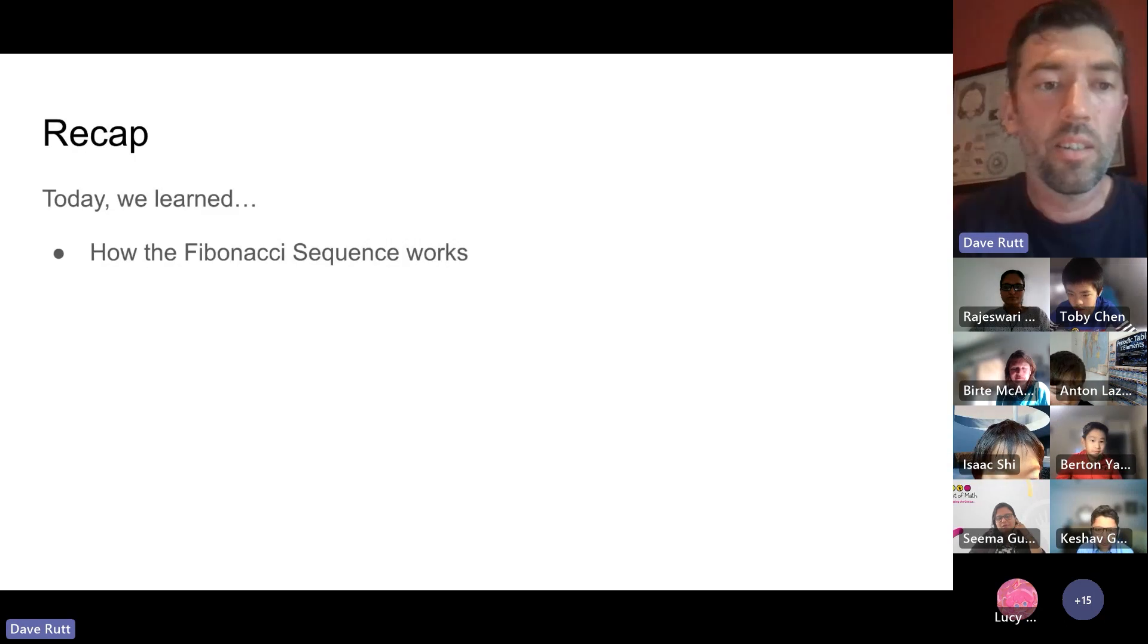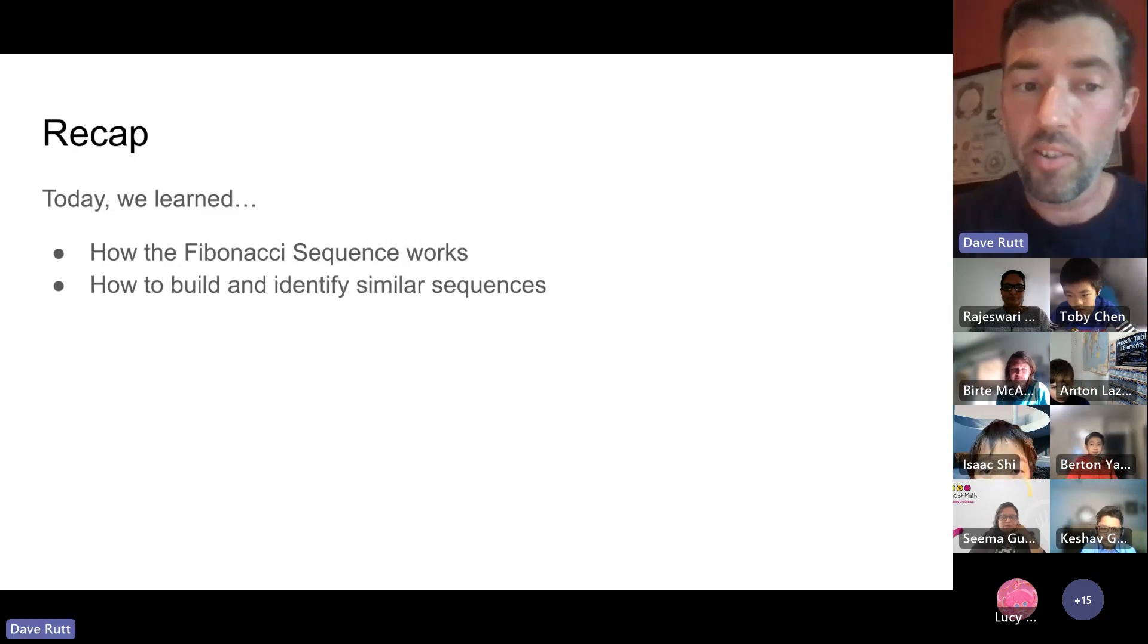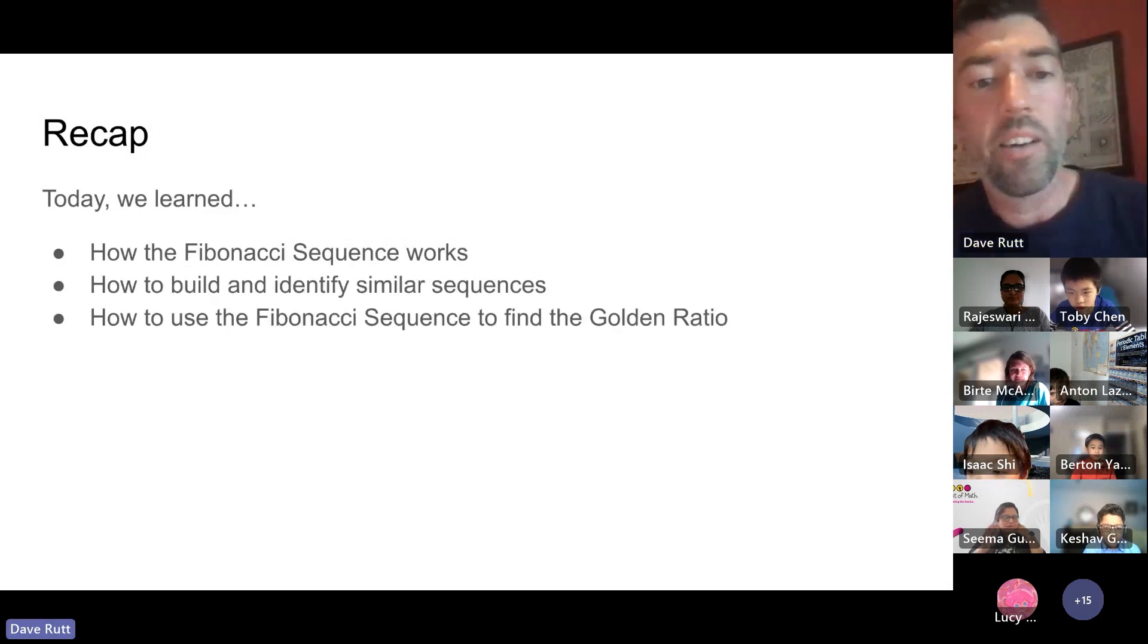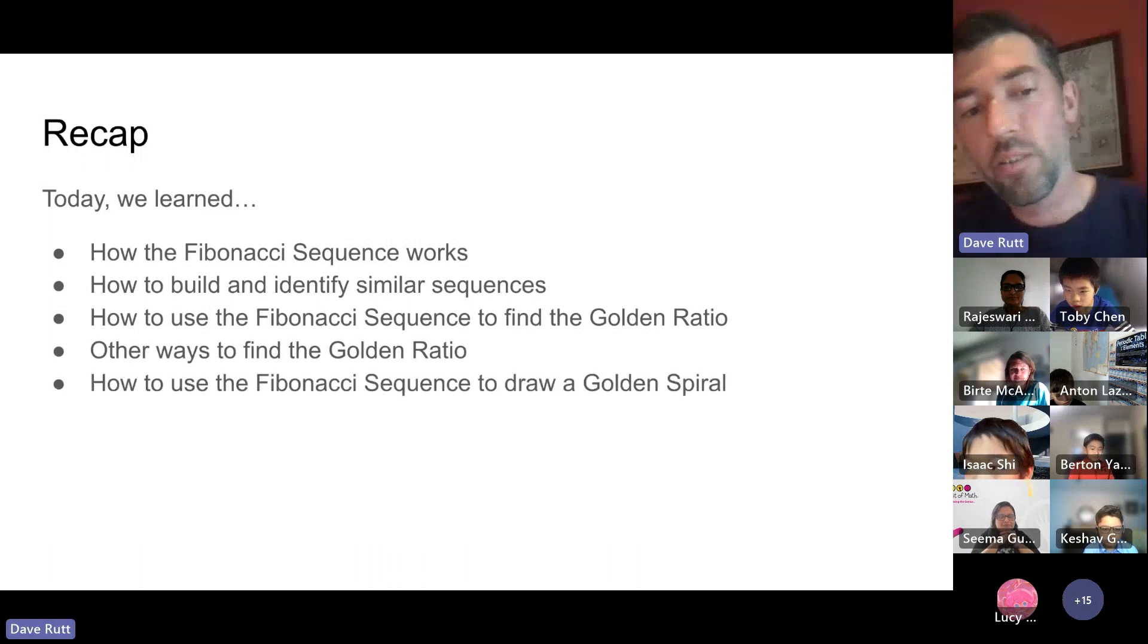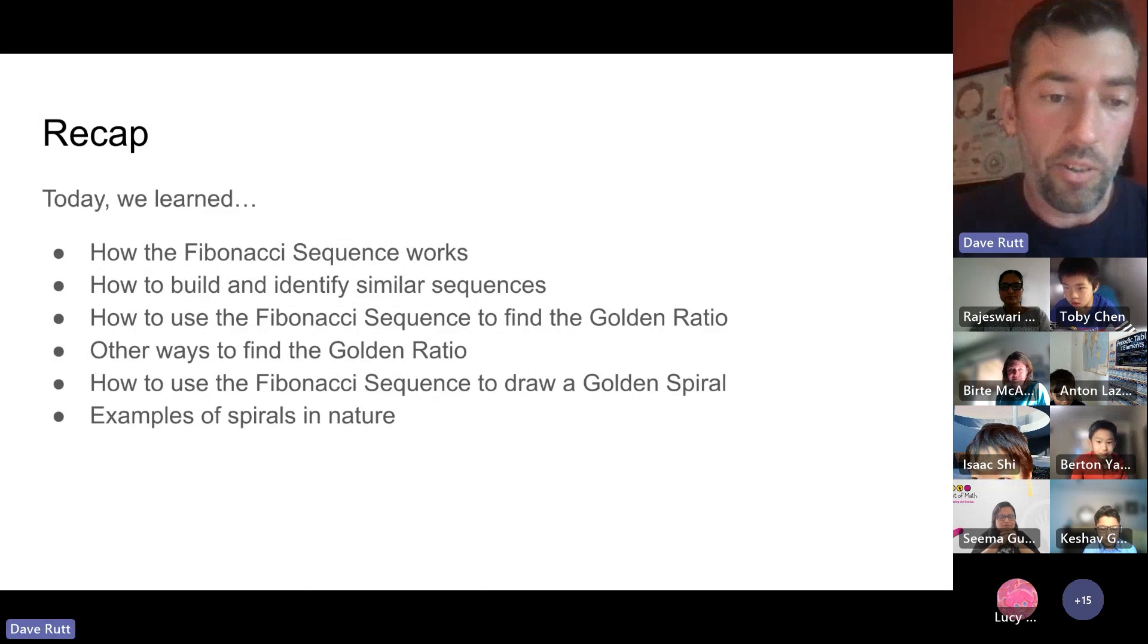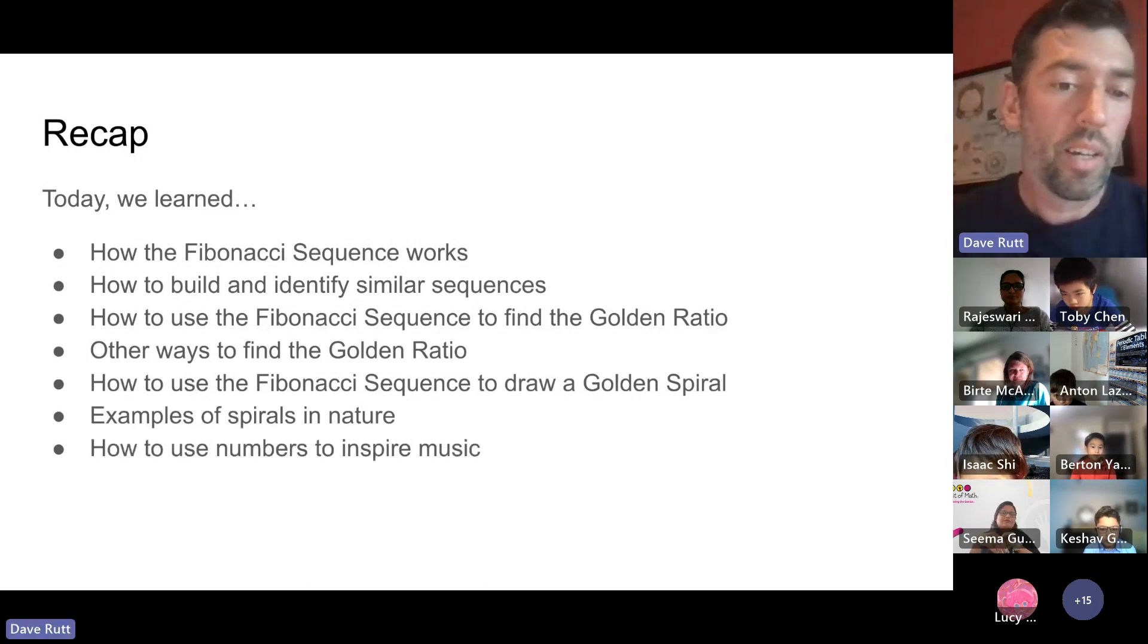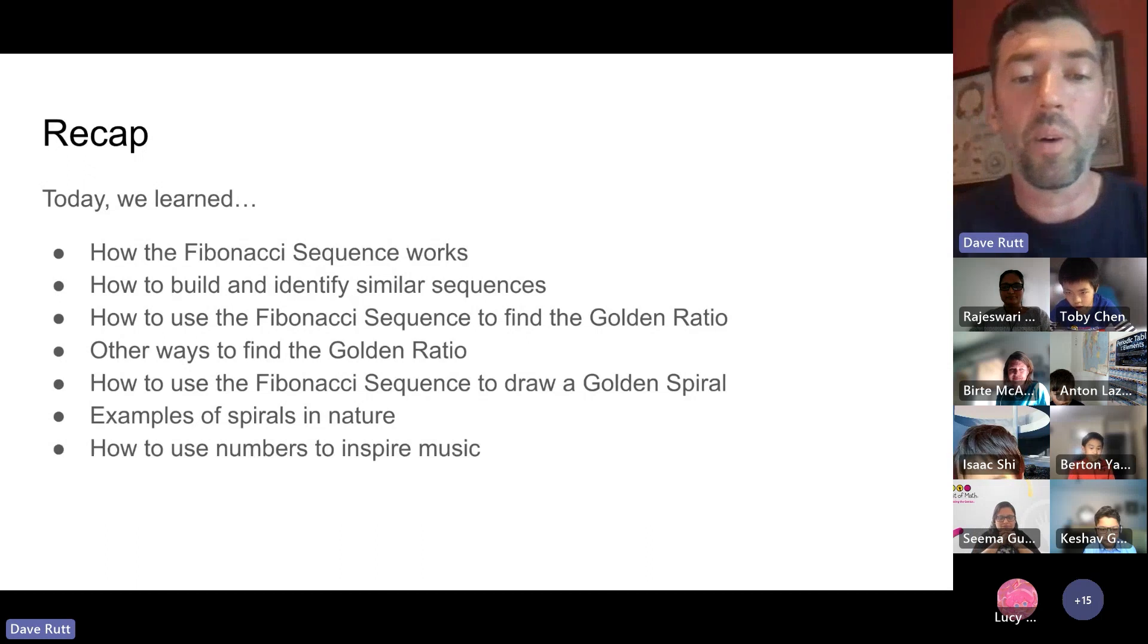Today we learned how the Fibonacci sequence works, how to build and identify similar sequences, how to use the Fibonacci sequence to find the golden ratio, some other ways to find the golden ratio, how to use the Fibonacci sequence to draw a golden spiral, some examples of spirals in nature, and finally, how to use numbers to inspire music.